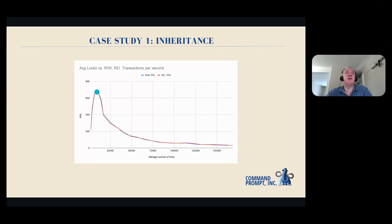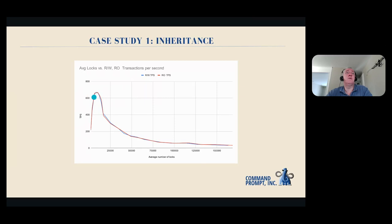In reality, you would probably start seeing performance problems somewhere around 20,000 locks. At 20,000 you're likely to realize that performance isn't doing so well. This seems to support that as you increase the number of locks being managed at any given time, performance does suffer.